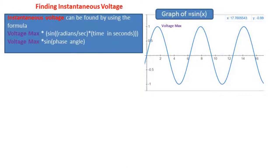Now let's find the instantaneous voltage. Instantaneous voltage is the voltage at a given time. It can be found using the formula voltage max times the sine of how many radians per second the wave is moving at, times the time in seconds, or simply voltage max times the sine of the phase angle.